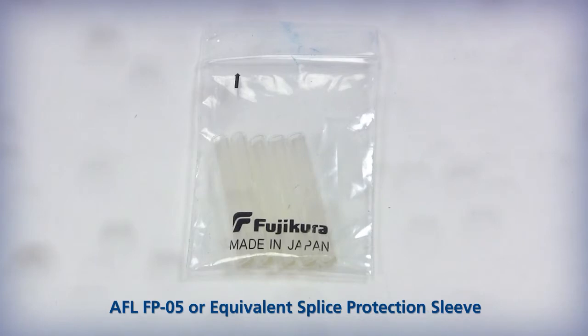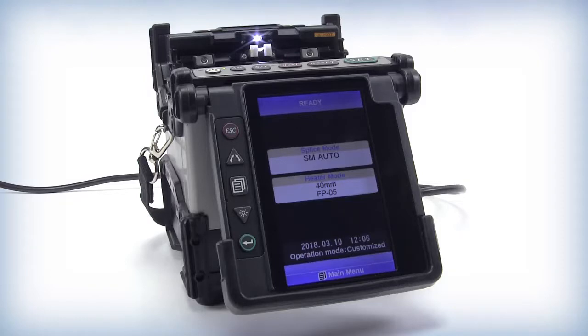And an AFL FP05 40mm 12 fiber ribbon splice protection sleeve. The fusion splicer must be set to splice 12 fibers using the correct splice mode, either single or multi-mode fiber.